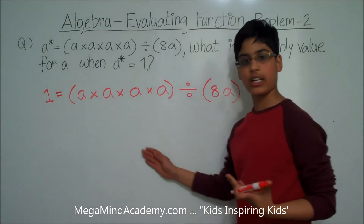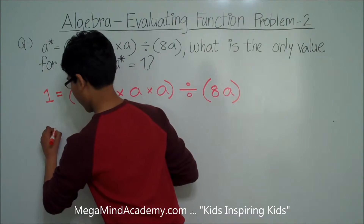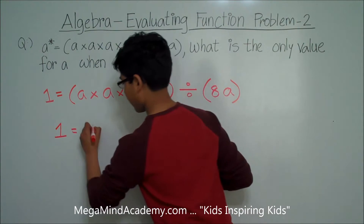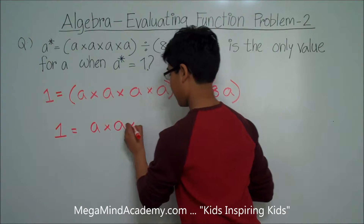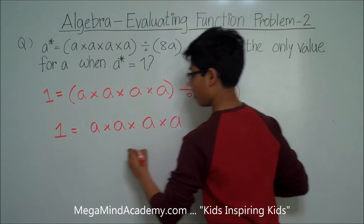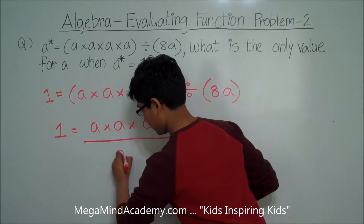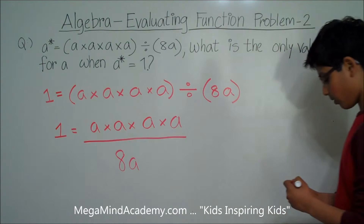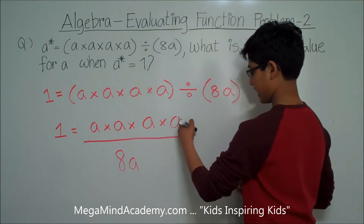Let's write this equation as a fraction. So 1 is equal to a times a times a times a over 8a. This a can cancel out with this a.